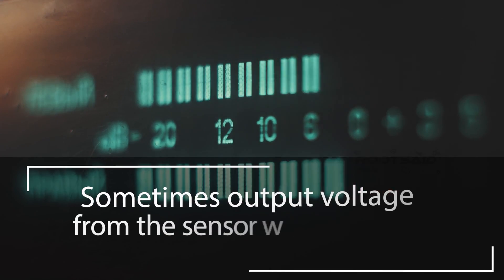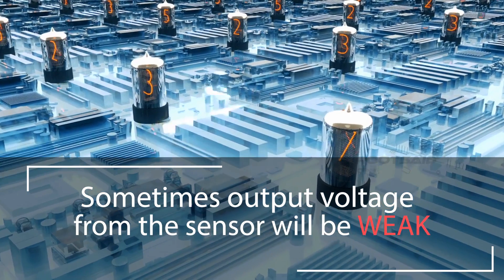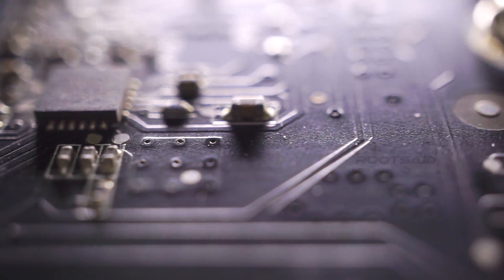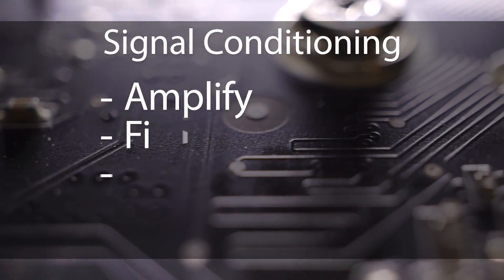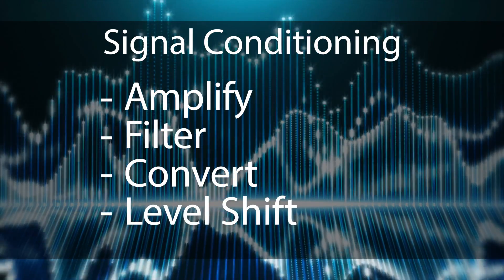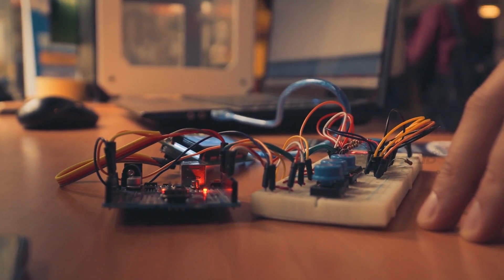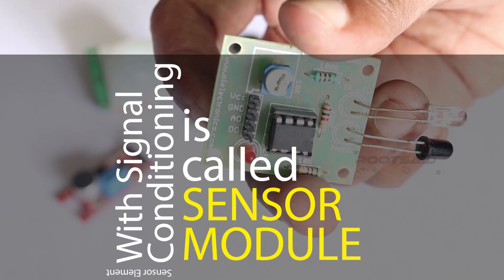In some cases, the output will be very low so the sensor element alone might not be sufficient enough to analyze the obtained signal. In such cases, a signal conditioning circuit is required in order to amplify and filter the signal produced by the sensor element in the desired range with respect to the microcontroller. The sensor element and the conditioning circuit is together known as the sensor module.